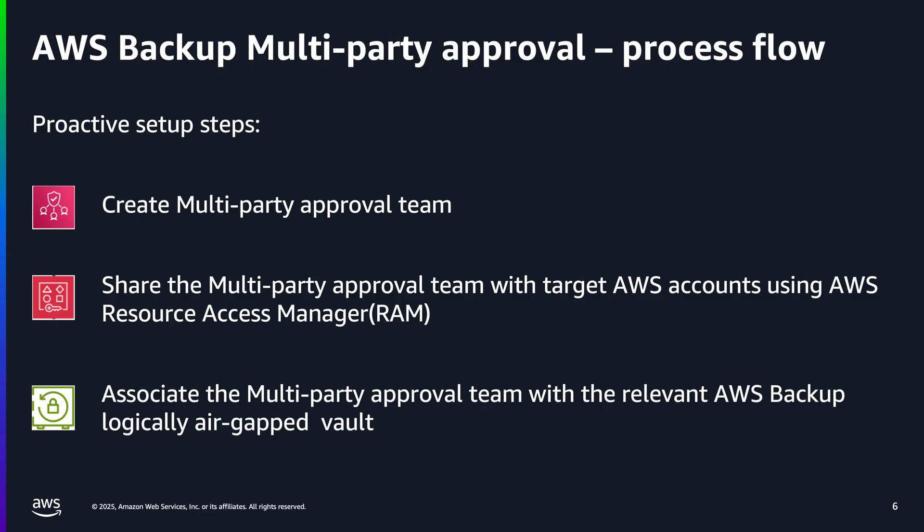AWS Backup Multi-Party Approval process begins with a proactive setup of centrally managed Multi-Party Approval teams. First, create a Multi-Party Approval team comprising trusted individuals from your organization. Then, share the approval team with your target AWS account or accounts using AWS Resource Access Manager. And last, associate the Multi-Party Approval team with the relevant AWS Backup Logically Air Gap Vault.